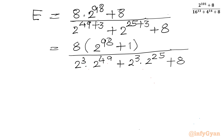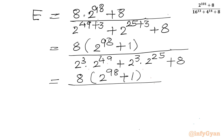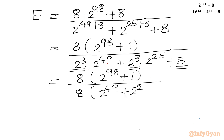Now 2 power 3 is 8, so I take 8 common from the denominator. In the numerator we have 8 times (2 raised to the power 98 plus 1). In the denominator, taking 8 common, we get 8 times (2 power 49 plus 2 power 29 plus 2 power 25 plus 1).